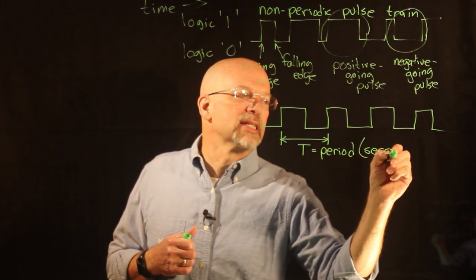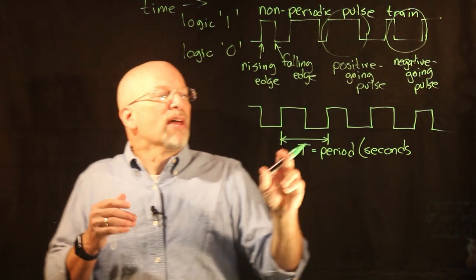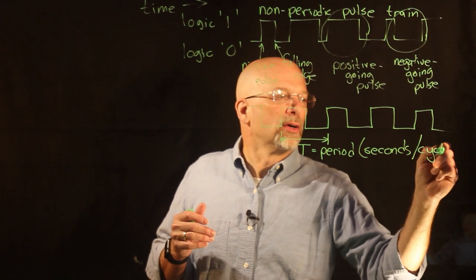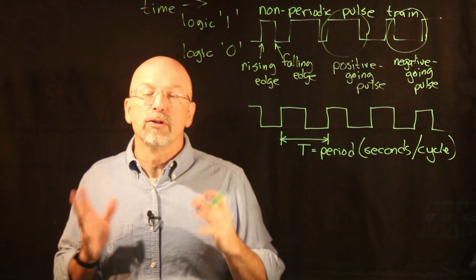We represent this with a capital T and we refer to it as the period. The period is measured in seconds. More specifically, it is measured in the number of seconds per cycle—in other words, how many seconds does it take for us to go through a full cycle.